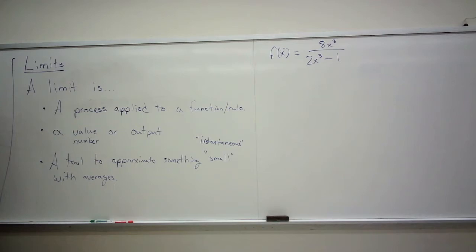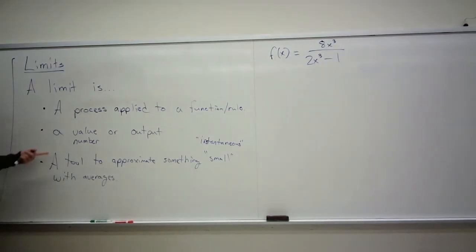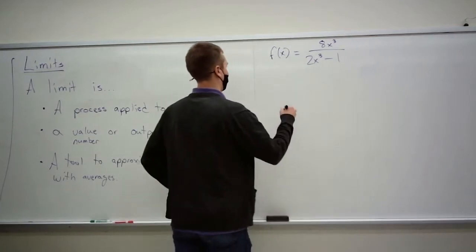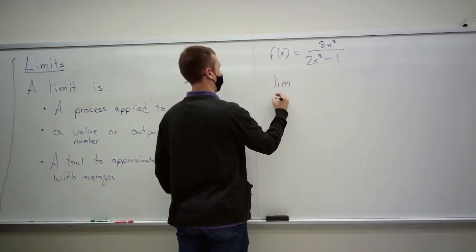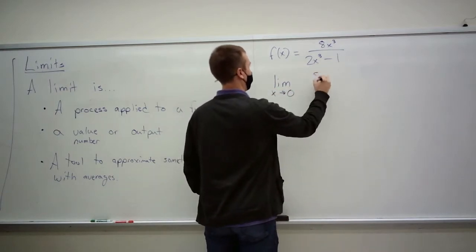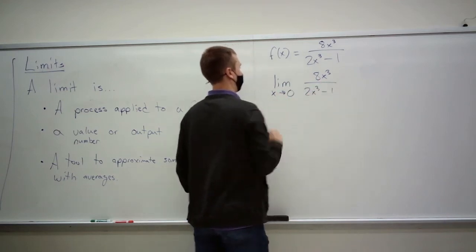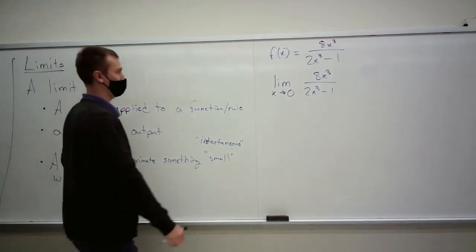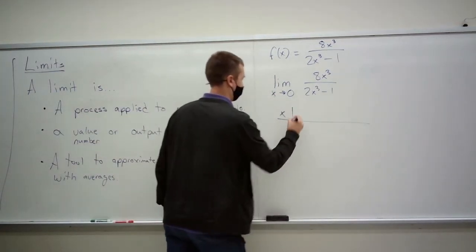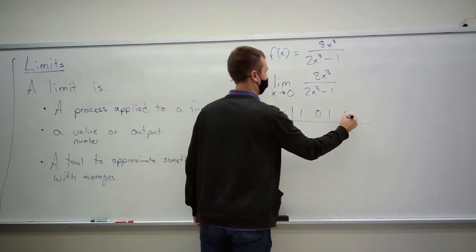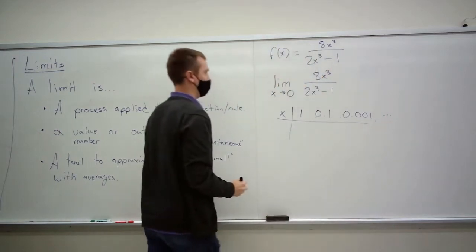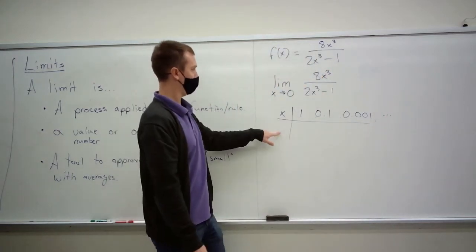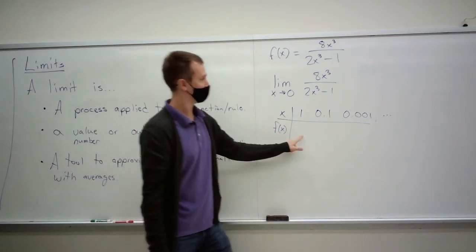Here's going to be our function for this example: it's 8x³ divided by 2x³ minus 1. If I can throw a limit on it, I can apply a process and maybe get something special out. So what about this: limit as x goes to 0 of 8x³ over 2x³ minus 1. As we've just seen, what I've now written means I'm going to do a process whereby this thing gets closer and closer to this thing, and I'll see if there's any pattern in the function as these values are plugged in.